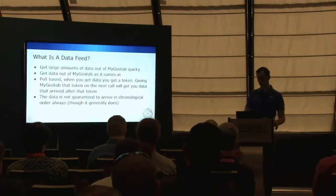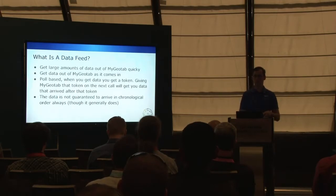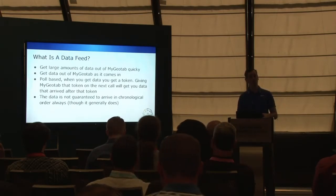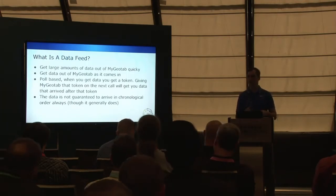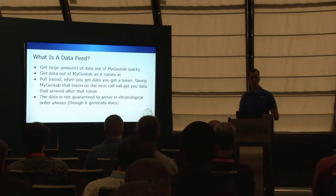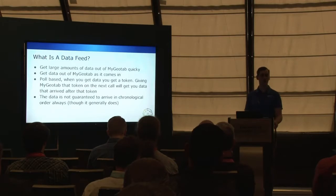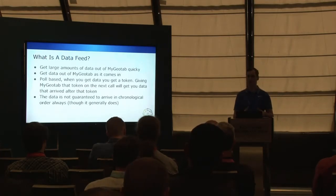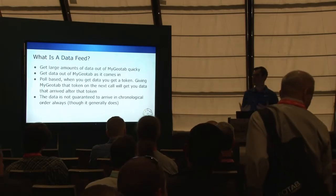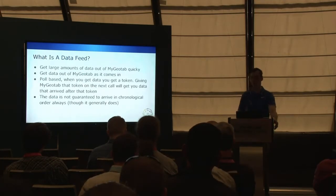The next thing I want to talk about is data feeds. Data feeds are a set of public APIs designed to get large amounts of data out of MyGeotab as quickly as possible, making data available to you as soon as it's available to MyGeotab. This is a poll-based API: you make a call, get some data back plus a token, and the next time you call you provide that token and get everything that came in since the last call. One important point: data is not guaranteed to arrive in chronological order, because it's not guaranteed to arrive to MyGeotab in chronological order — network delays, servers down, slowdowns all affect timing. Your application needs to be able to handle that.